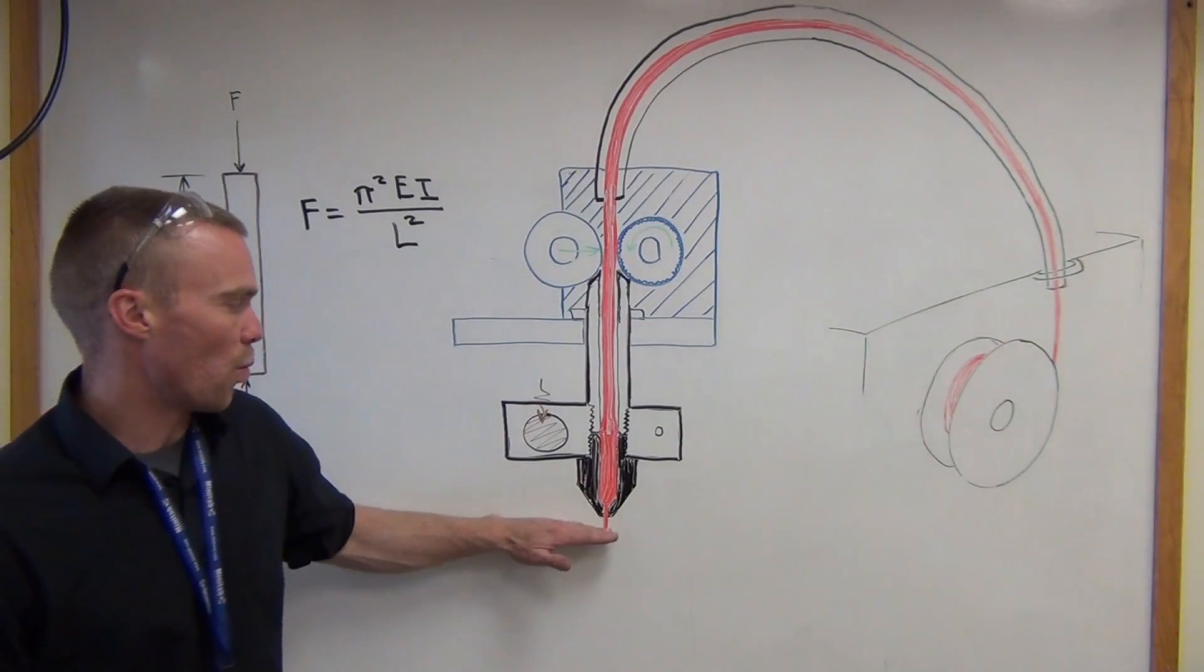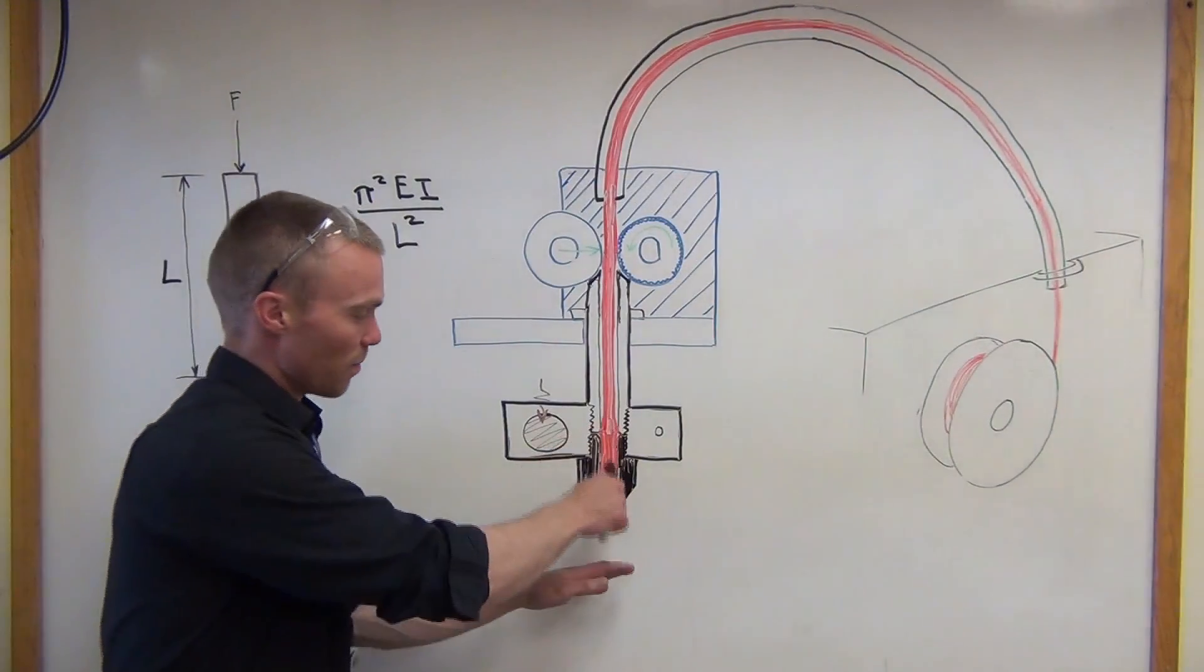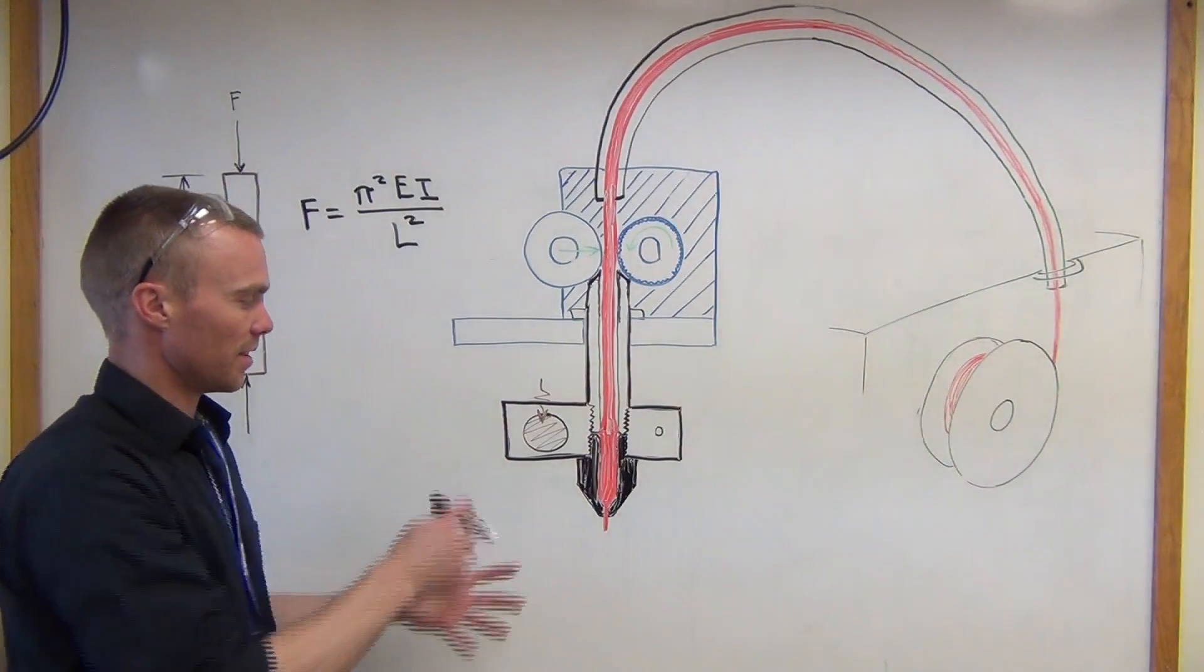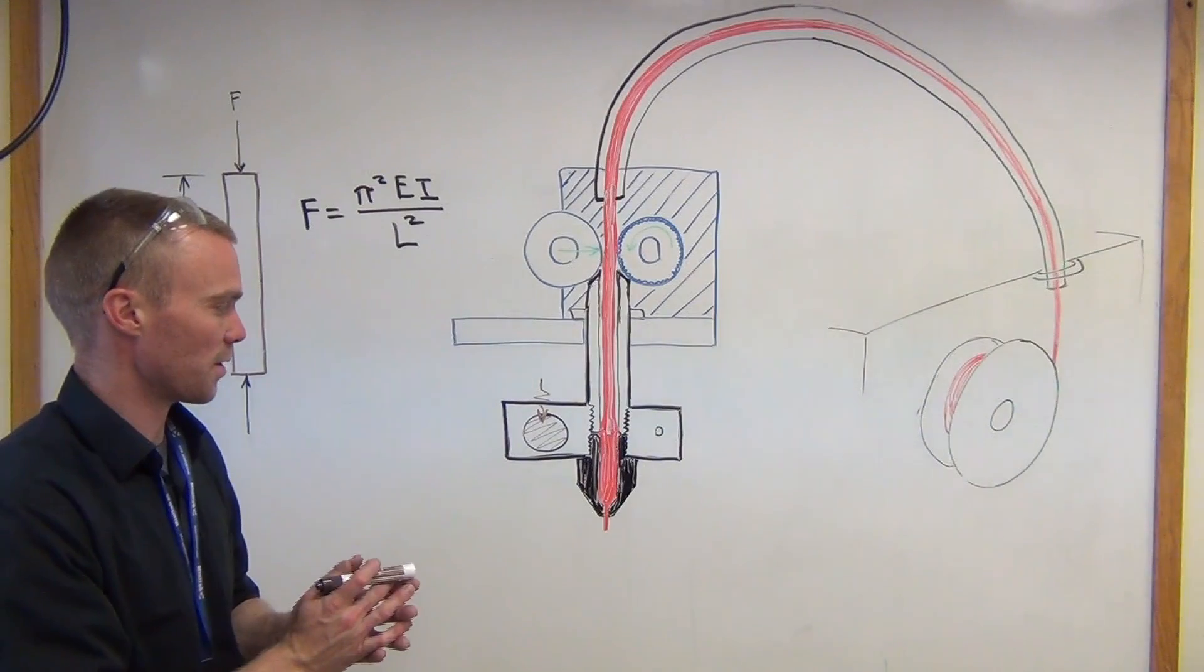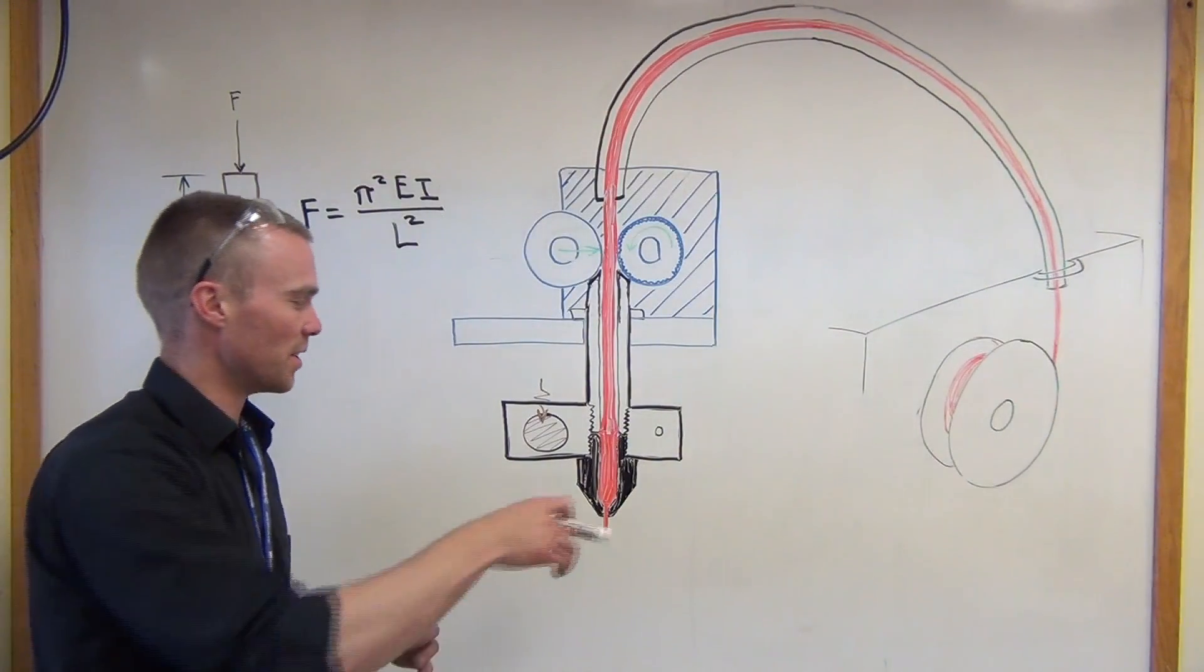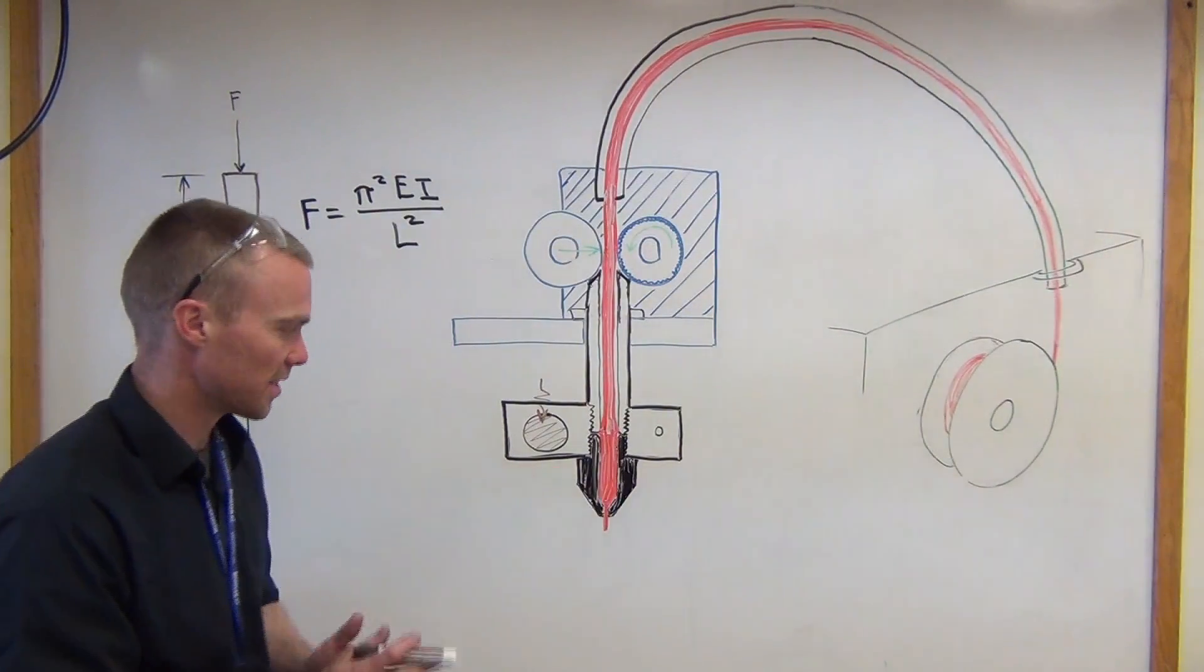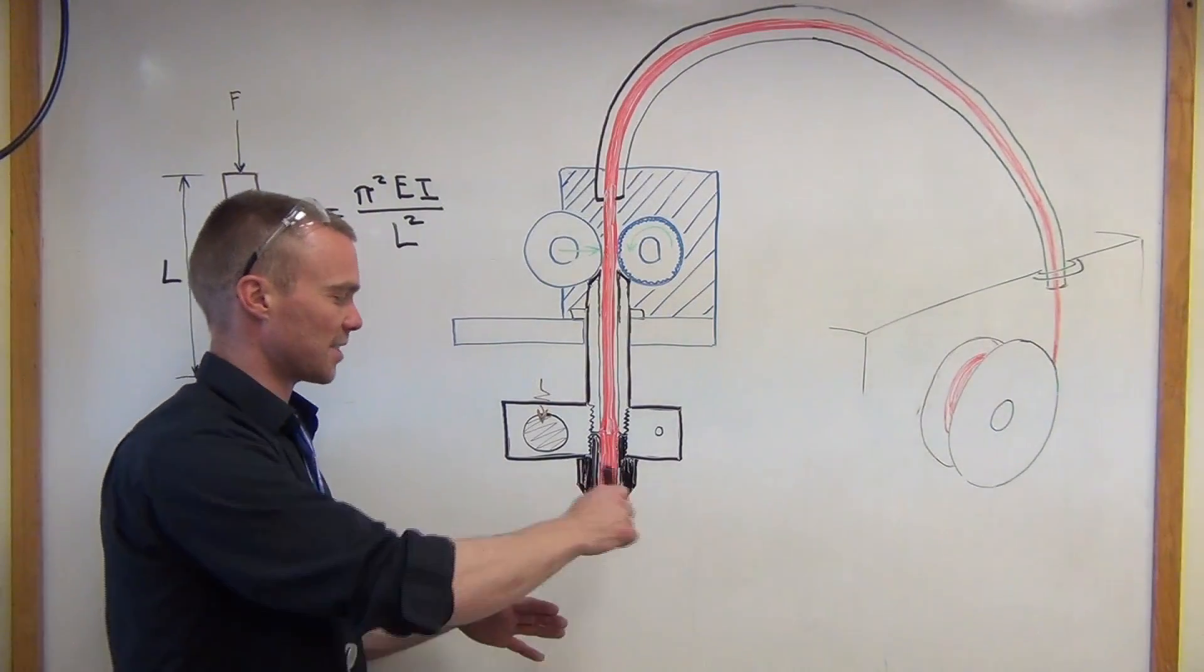When you want to stop a print at one point and start up again at another point, if the features of your part have individual components in them, or if you're printing multiple parts to not drag strings between those, you'll actually use retraction.